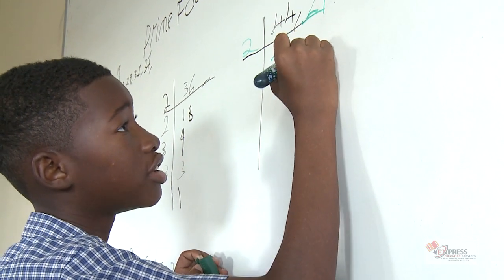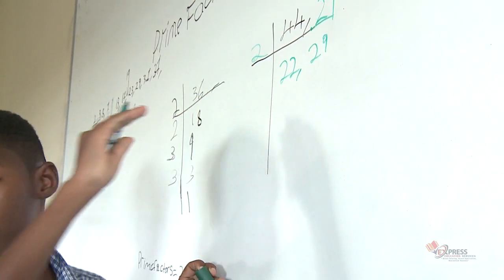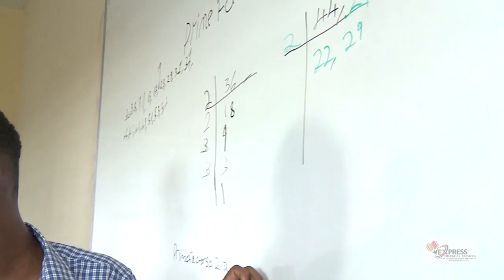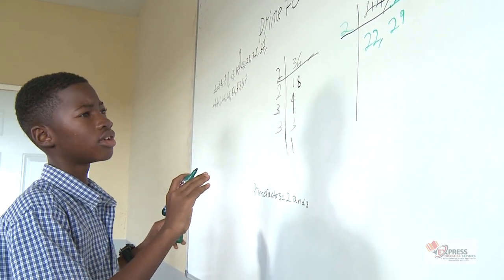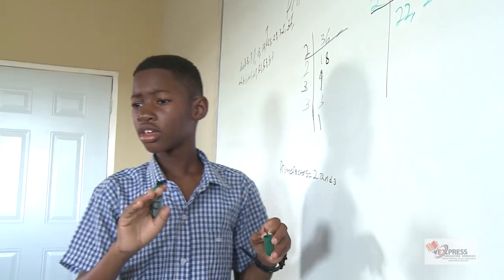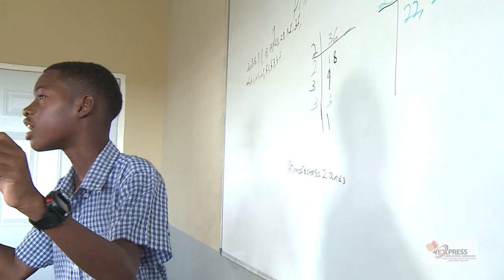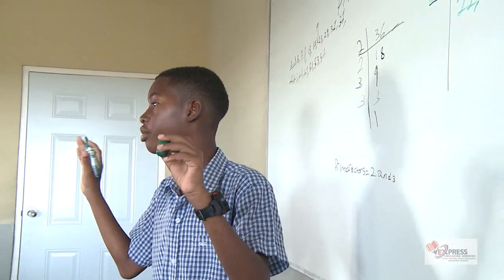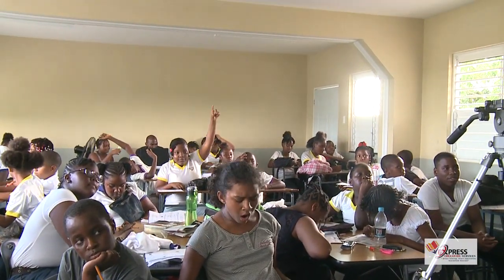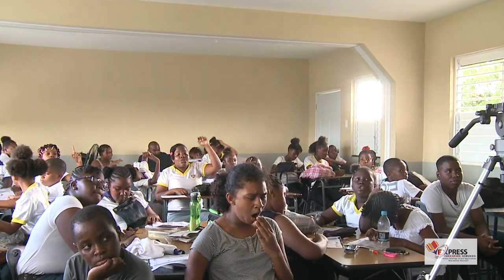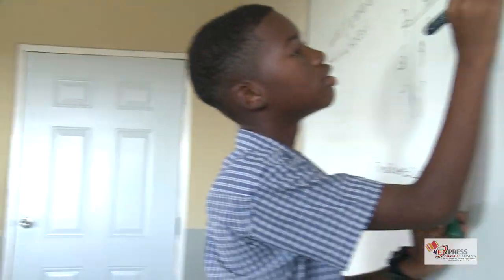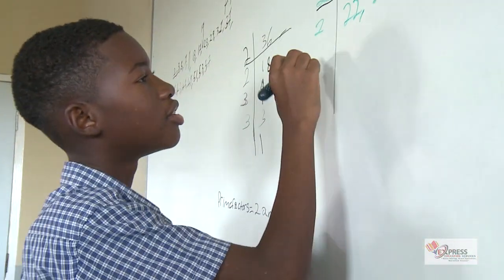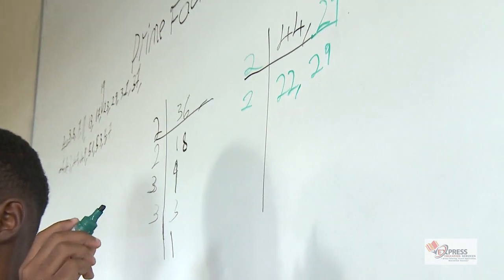I'll go back to 29 because 2 cannot go into 29. Alright, class, tell me the smallest prime number I can use. 2 class — 2. Alright, 2 into 22 is 11.